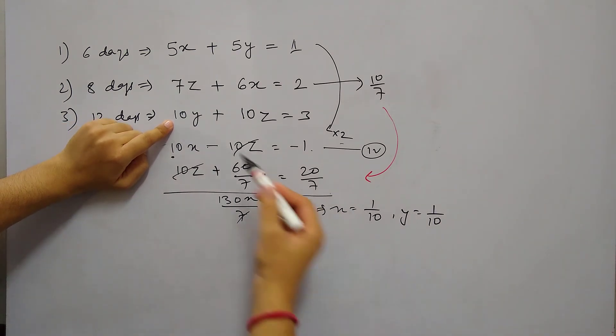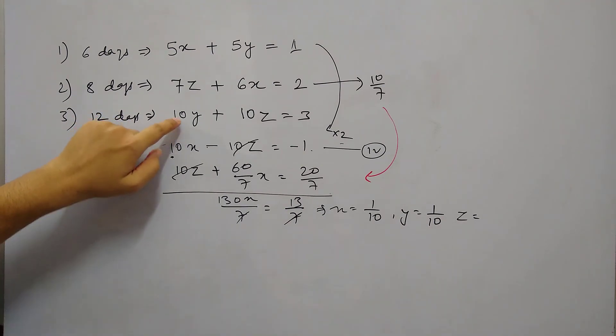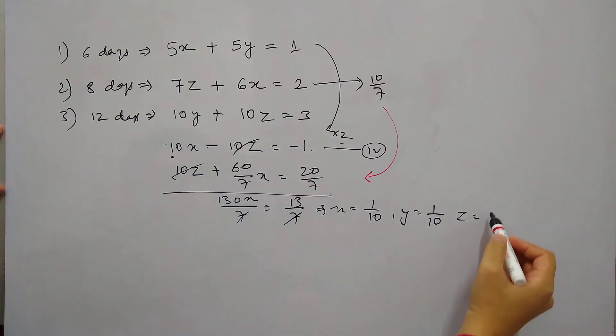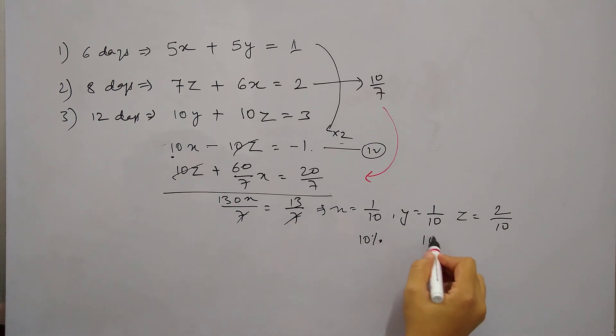then Y is 1 by 10, so this will get cancelled. 1, this side we will have 2. And Z equals to 2 by 10. So now this is clear that every day X is doing 10 percent of the job, Y is also doing 10 percent of the job, and Z is doing 20 percent of the job. 2 by 10.